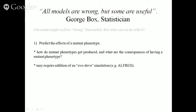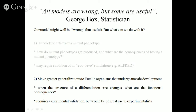We can also make greater generalizations to the nature of eutelic organisms that undergo mosaic development. We can look at when the structure of a differentiation tree changes — if we build a differentiation tree from our data and change the topology, what are the functional consequences? In C. elegans, the lineage tree is deterministic, so if we change that tree's topology, what are the consequences in the adult? This might be of use to experimentalists understanding mutants, to synthetic biologists, and to Open Worm people. Long-term goals include integrating this with experimentation, education, and other modeling initiatives.